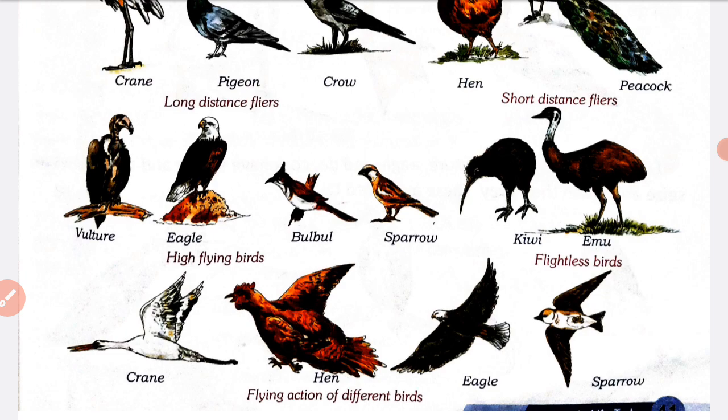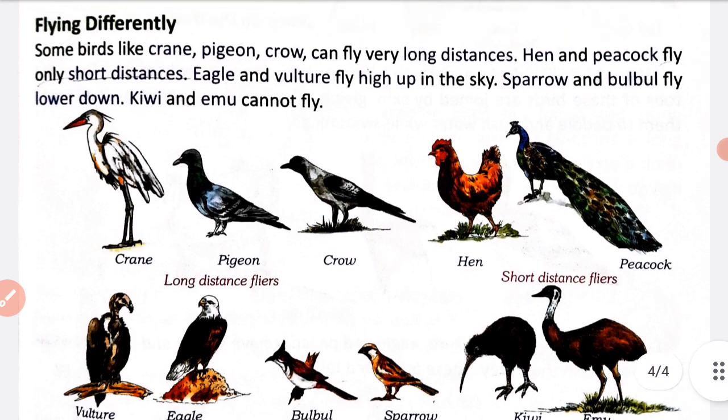Now, kiwi and emu are birds but they can't fly, so they are called flightless birds. Kiwi and emu ko kaha jata hai flightless birds - yeh birds to hain, lekin yeh ud nahin sakte. We will complete this chapter in the next video. Keep learning, stay tuned. Thank you.